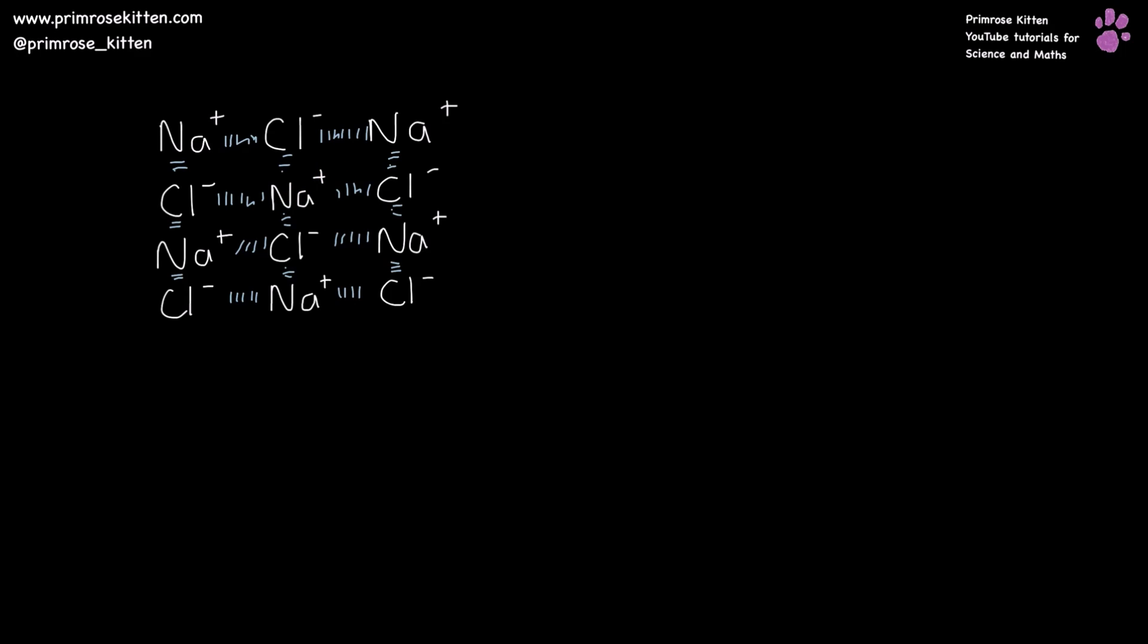So this is our giant ionic lattice, where each individual ion is attracted, sometimes strongly, really strongly to the close ones, and not so strongly to the ones that are far away, but attracted to lots of different ions. Now these electrostatic interactions are very strong. It takes a large amount of energy to break them, which is why it has a high melting point and a high boiling point.